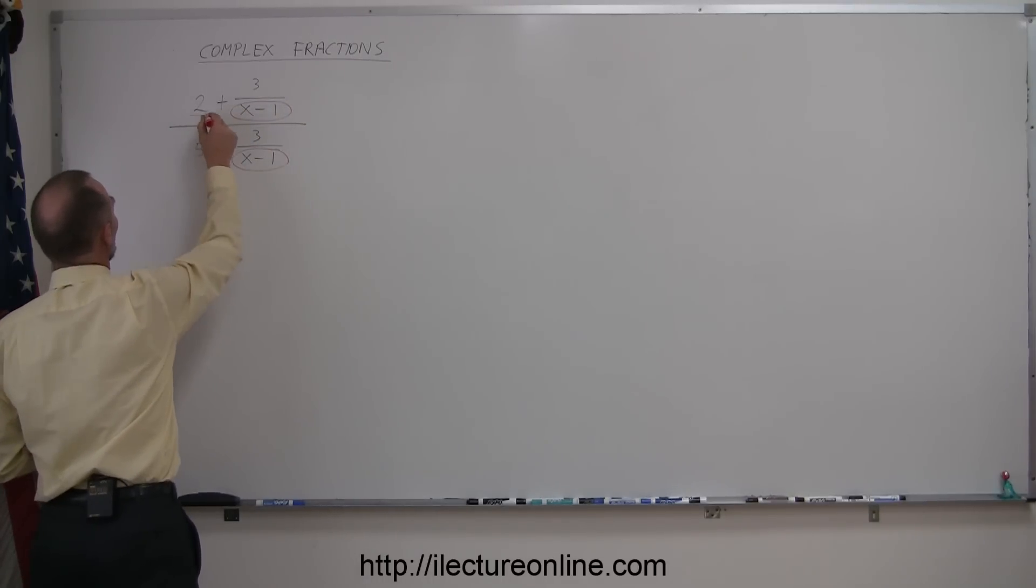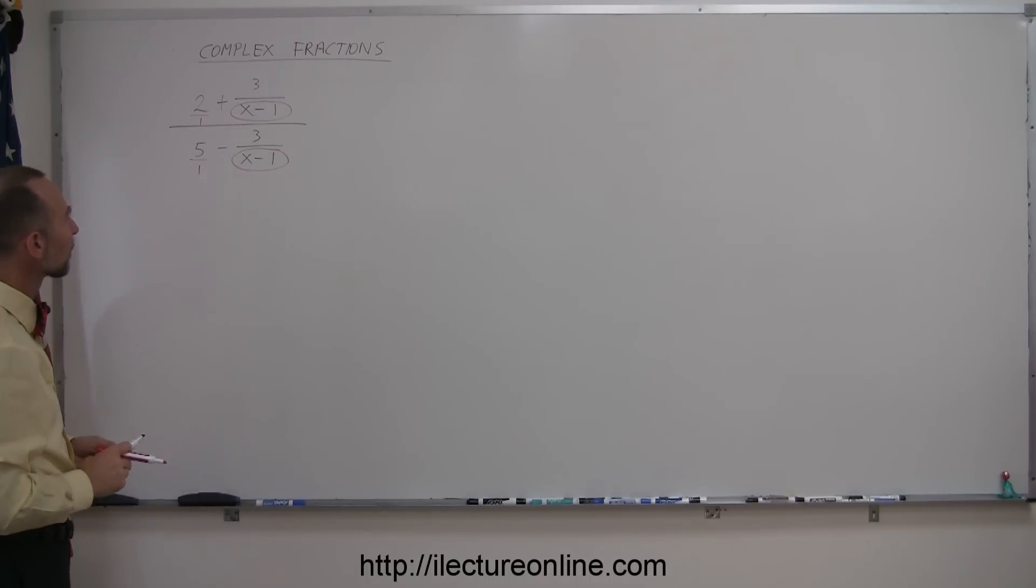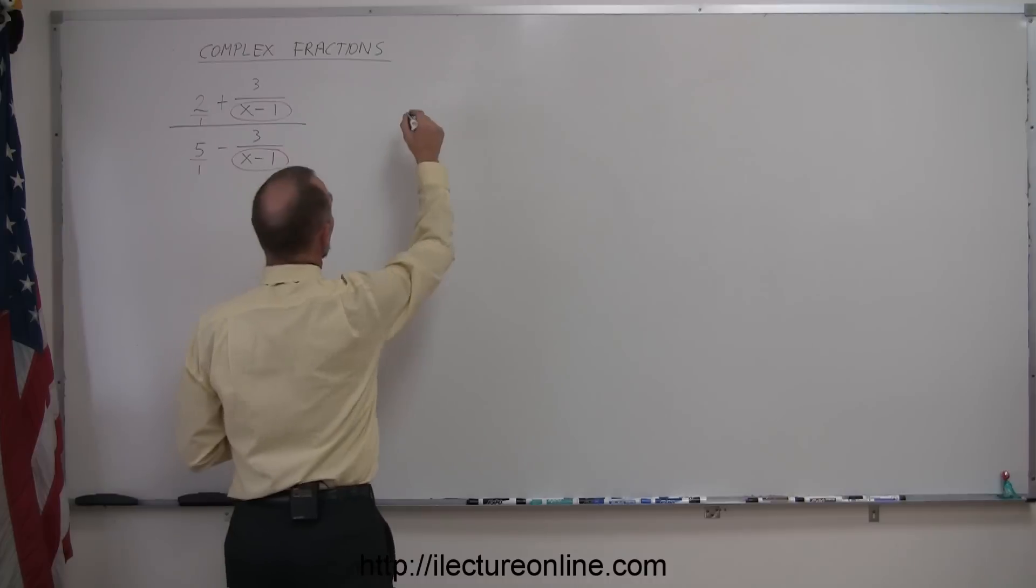Here we can actually say this is over 1 and this is over 1, so we can ignore those denominators. The common denominator among all the denominators that I circled is x minus 1. That's very straightforward, so we can call that the LCD.